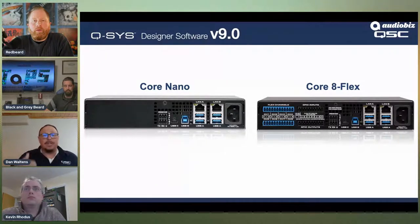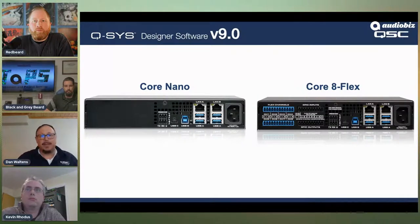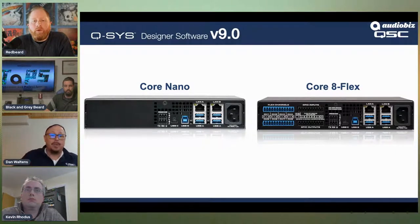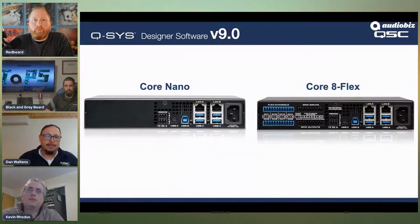The Core 8 Flex is similarly loaded, but adds eight Flex channels — the same configurable analog I/O as in the Core 110 or IO-8 Flex box. You can configure them any way you want: one in/seven out, two in/six out, etc. It also adds GPI and GPO. Both new cores ship with 8x8 software Dante, support eight channels of echo cancellation, and handle 64x64 network audio channels.